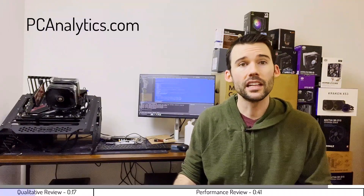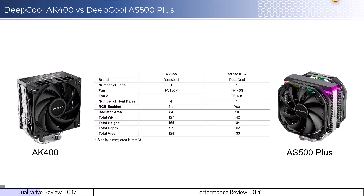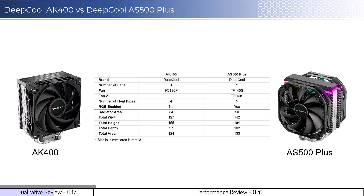With that in mind, let's start by looking at some qualitative metrics. Both coolers show the side of the cooler that would face the RAM, so both coolers will not have RAM clearance issues in most setups. Additionally, the AK400 uses a single fan while the AS500 Plus uses two fans, and it is possible to add a second fan on the AK400. In regards to installation, both coolers are relatively easy to install.